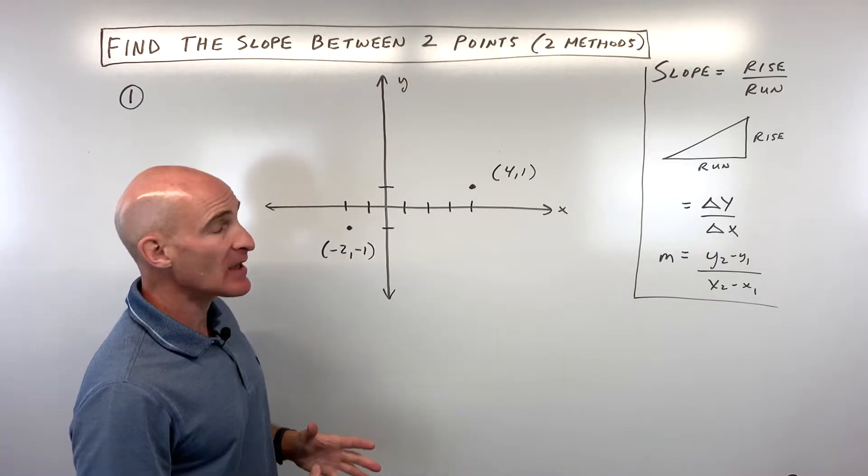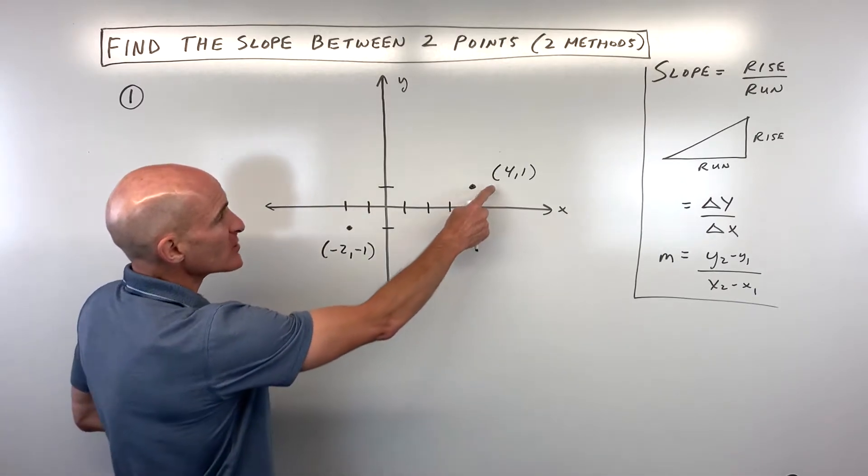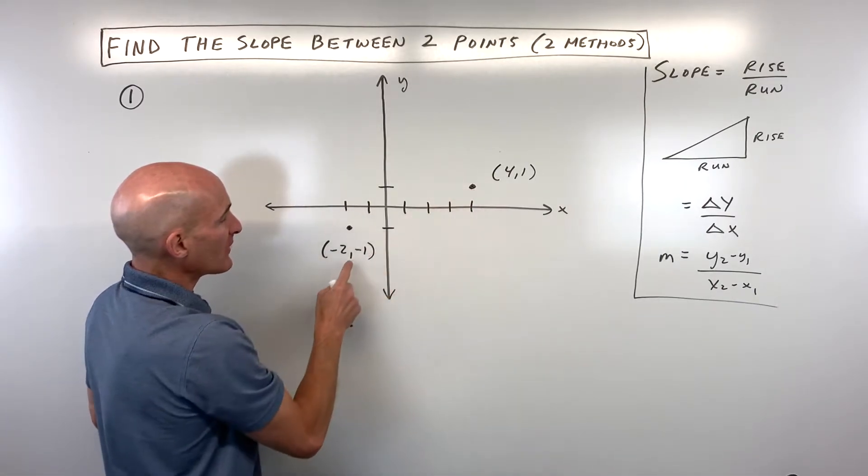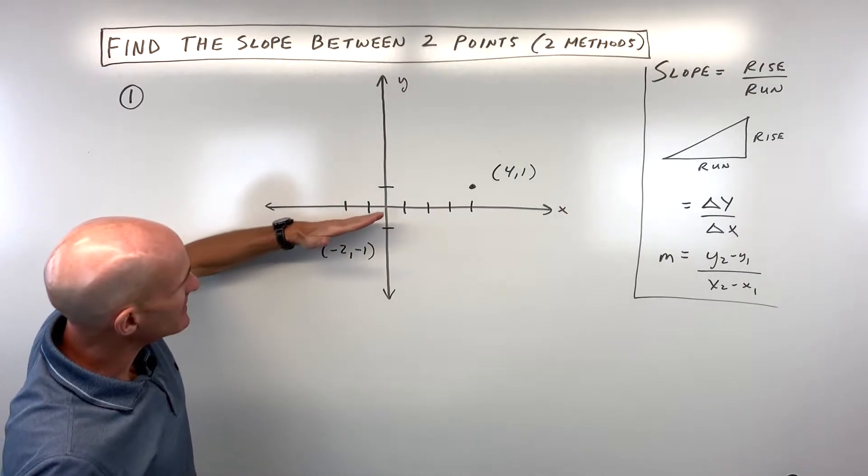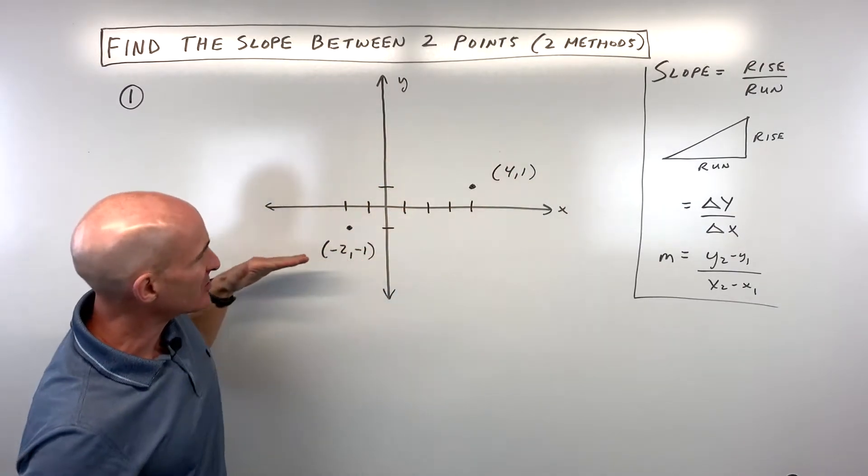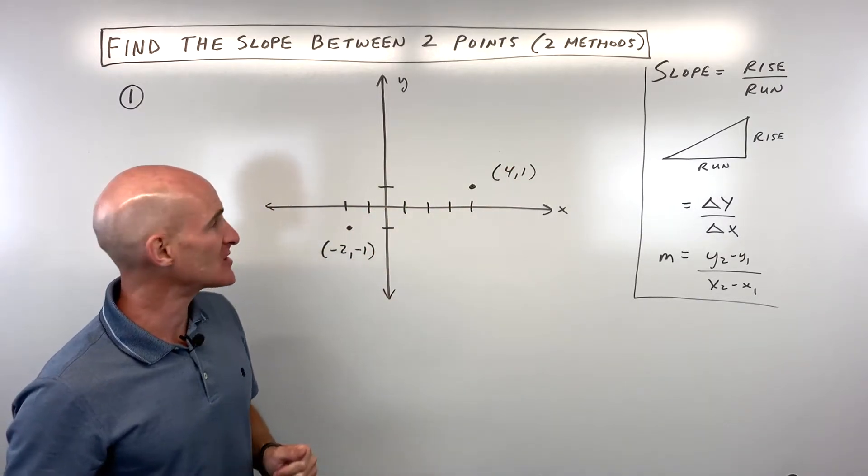Let's do the first one together and the second one you can test yourself and practice on your own. Notice we're given two points here: this point 4, -1 and this point negative 2, negative 1. We're trying to figure out what's the angle of the line, what's the slope, like a ski slope, how steep is it.